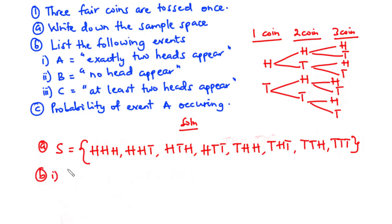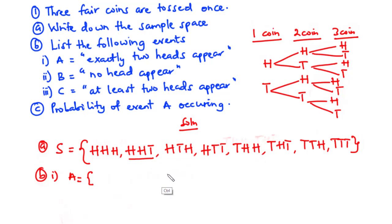For part B(i), set A — exactly two heads appear. Looking at the sample space, the outcomes with exactly two heads are: HHT, HTH, and THH. So set A = {HHT, HTH, THH}.